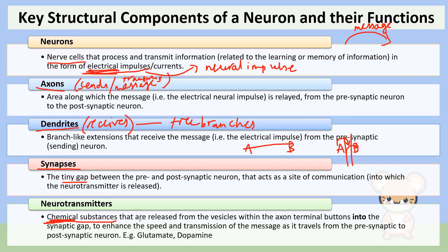Neurotransmitters are chemical substances released from the vesicles in the axon terminal buttons into the synaptic gap to enhance the speed and transmission of the message as it goes from the pre-synaptic neuron to the post-synaptic neuron. There are different types of neurotransmitters with different functions: dopamine plays a big role in mood and movement, while glutamate plays a really big role in learning. If you do VCE Psychology, you'll develop a much better understanding of these neurotransmitters.